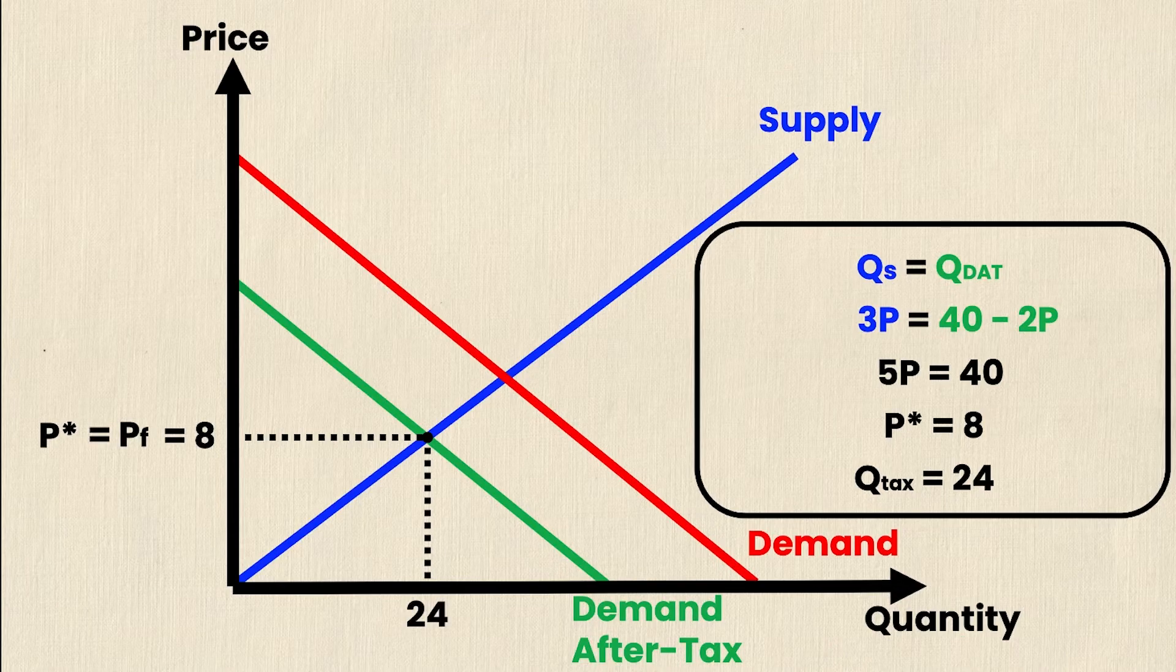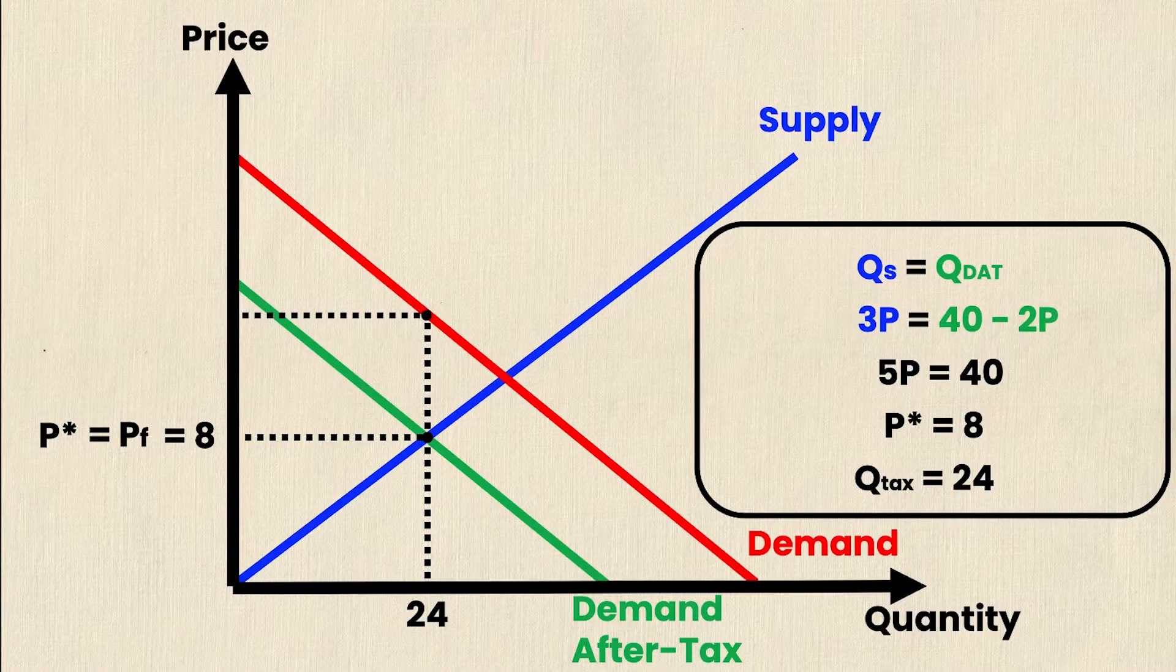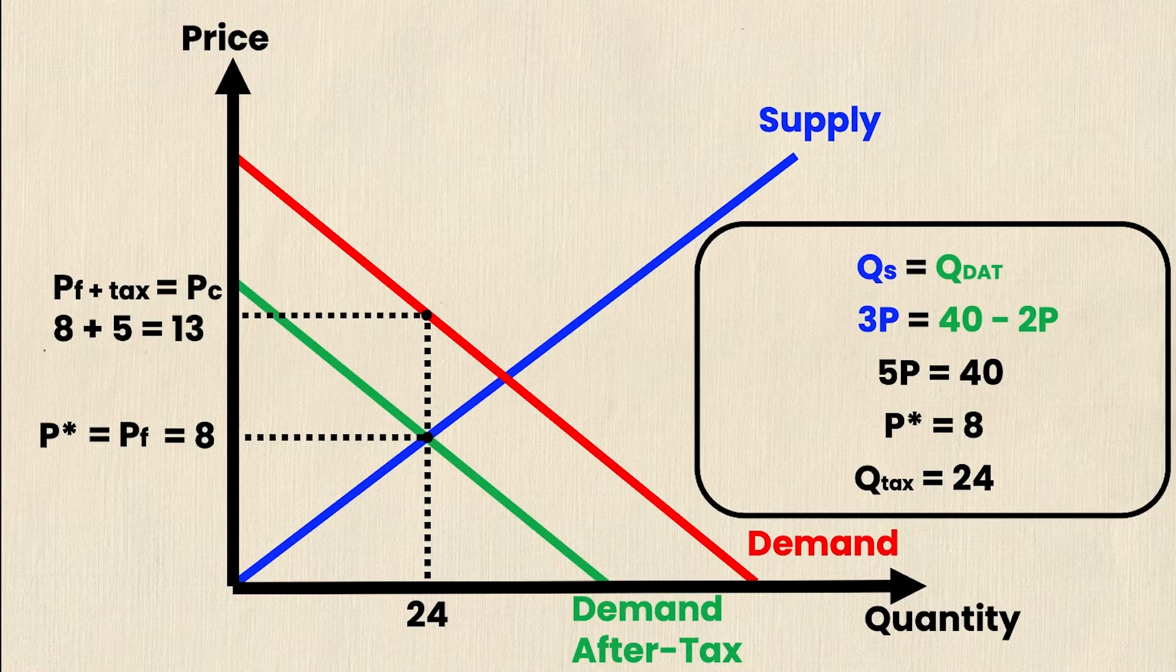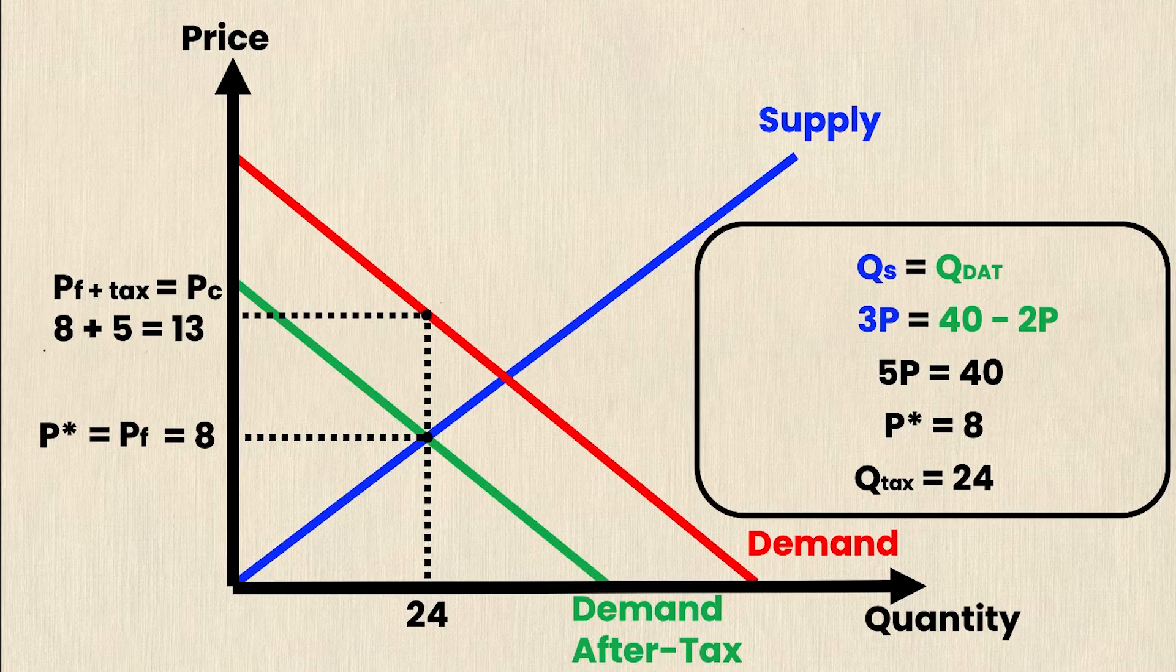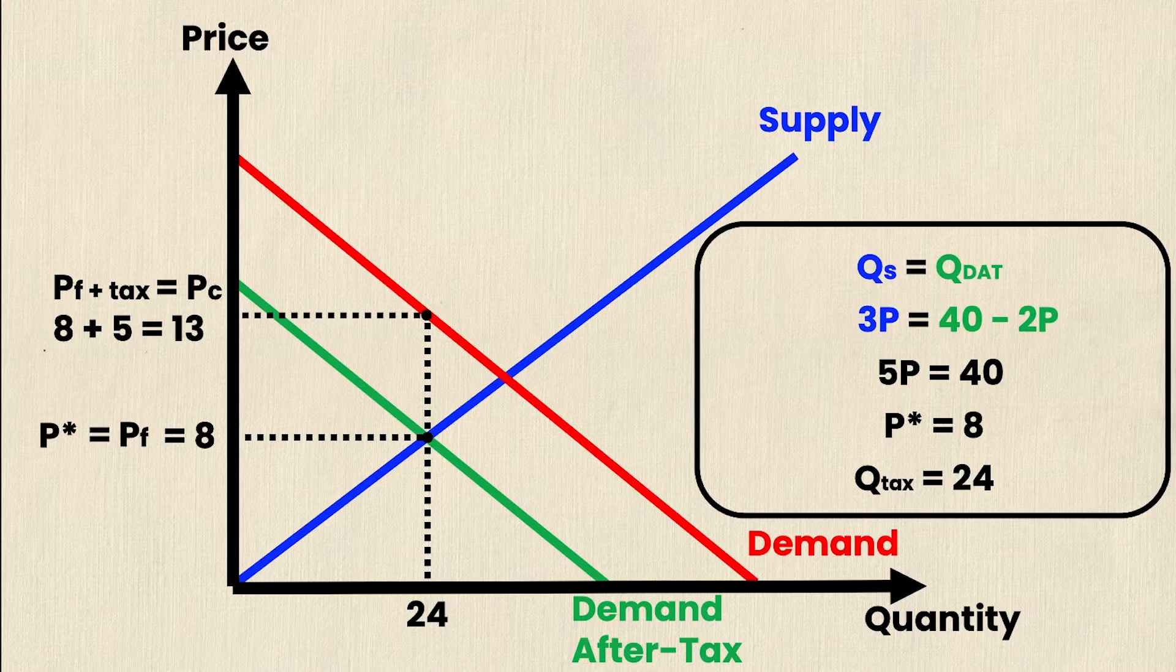You'll notice that P star is equal to PF, which is the price the firms receive, which is equal to $8. And the quantity traded in the market is 24 units. However, the price that the consumers pay is actually up here. And this point is 5 units higher. So we'll denote it as PC and PF plus the amount of the tax is equal to PC. And in this case, PF or the price the firms receive is $8. The tax is $5. And therefore the price the consumers must pay is simply 8 plus 5, which is $13. So PC is equal to 13.